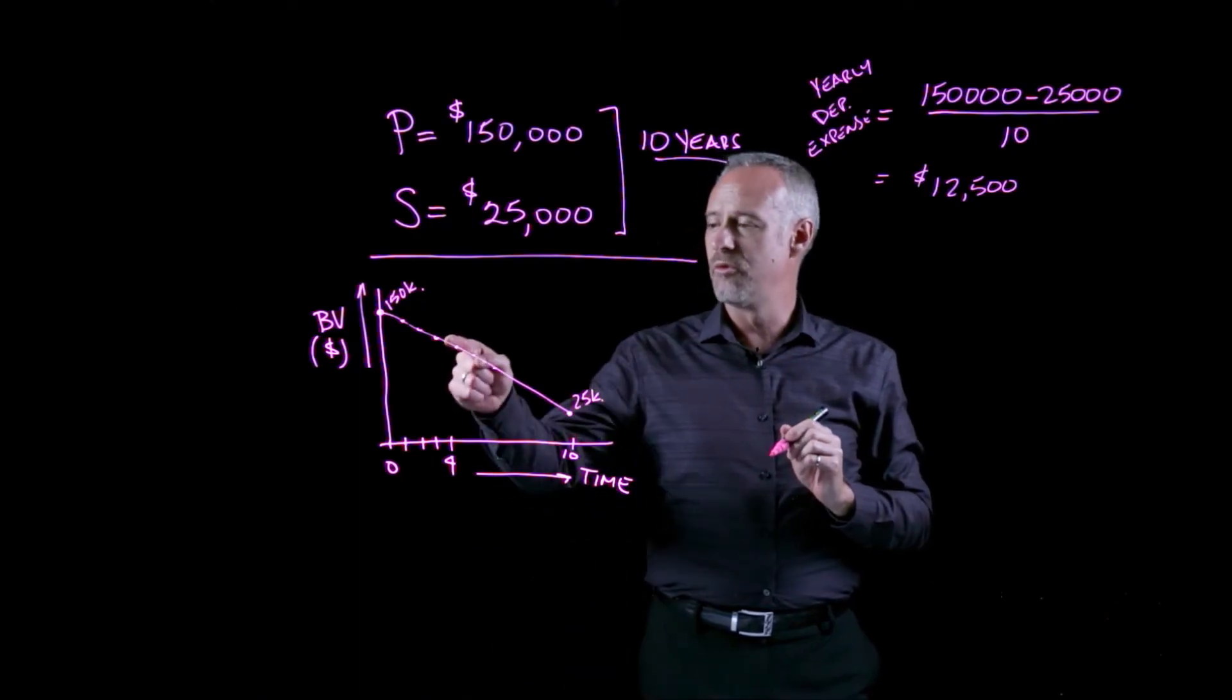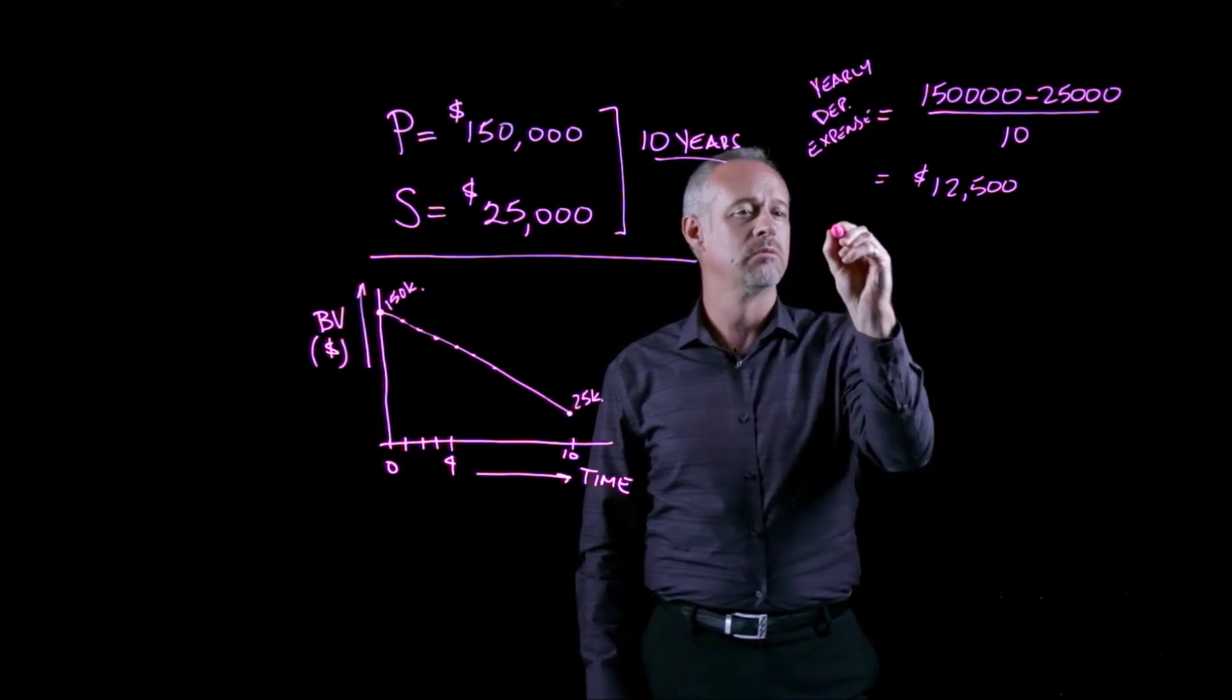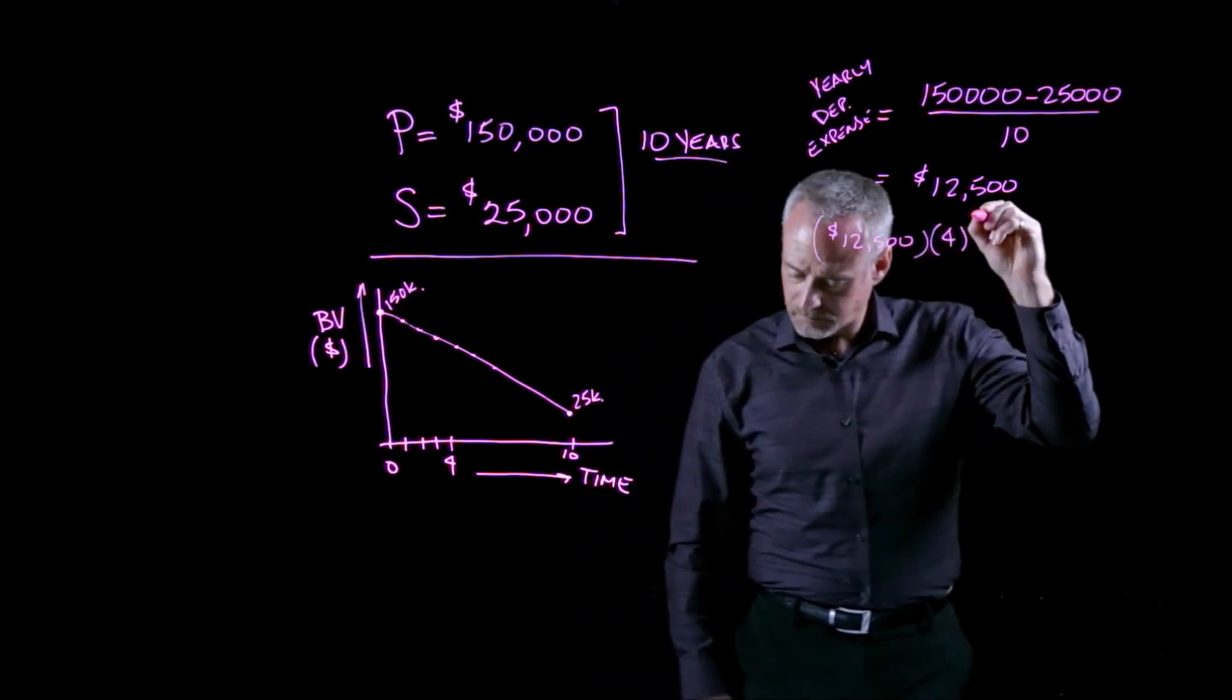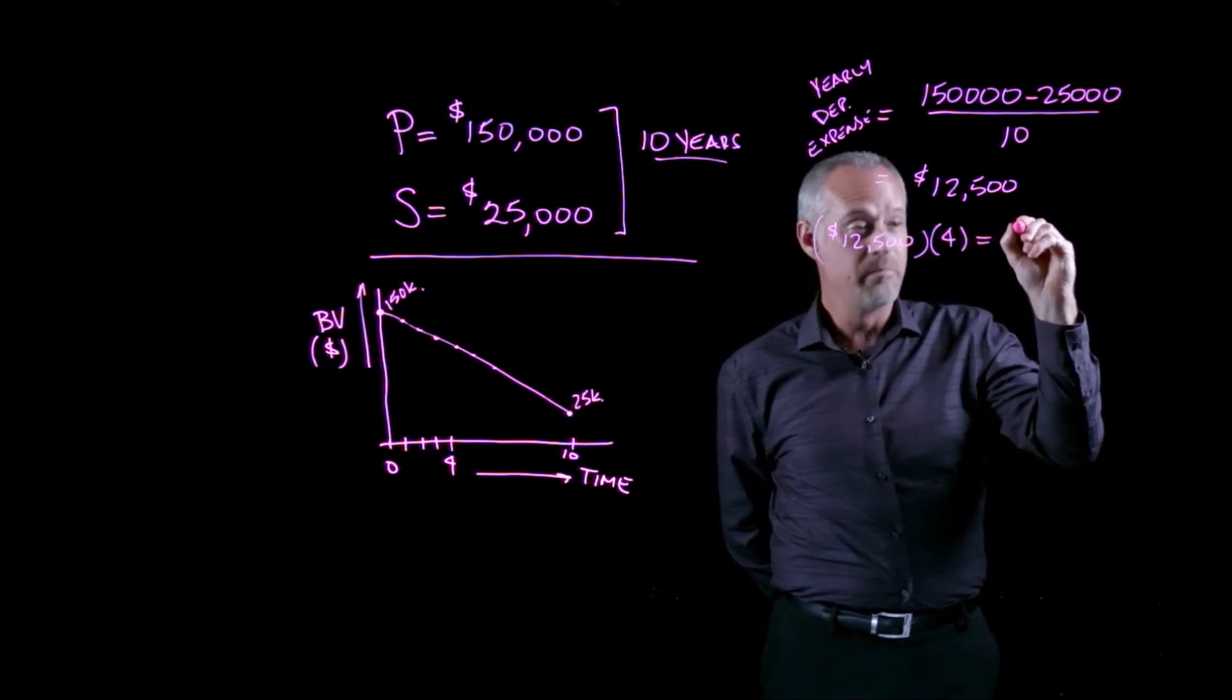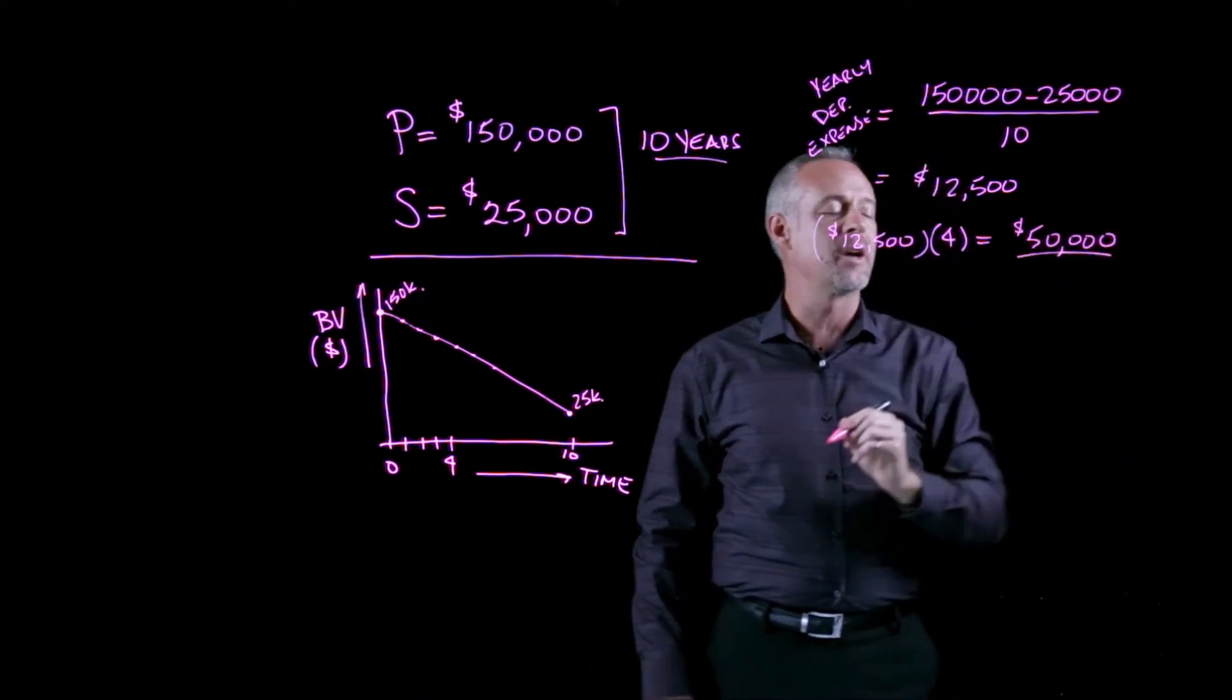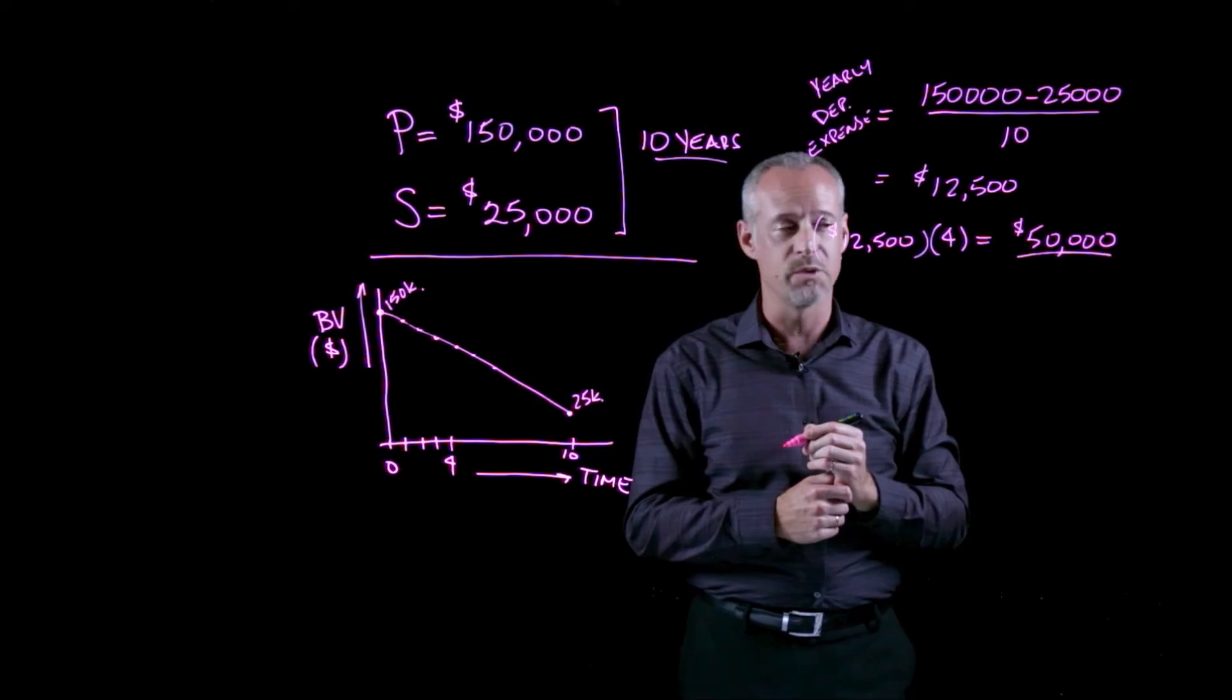And if I want to know the book value after four years, really I can just do twelve thousand five hundred times four. Twelve thousand five hundred times four. And if I know I've accumulated fifty thousand dollars of depreciation over four years,